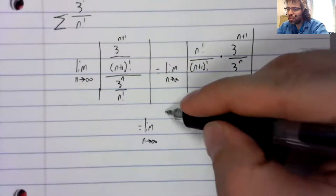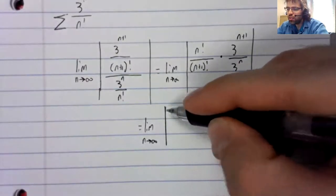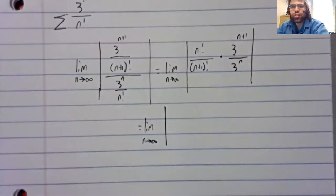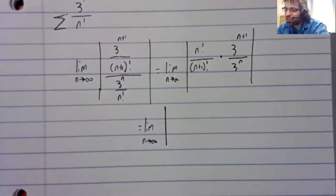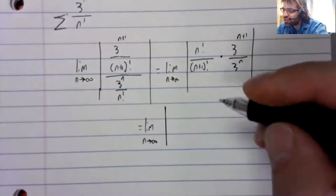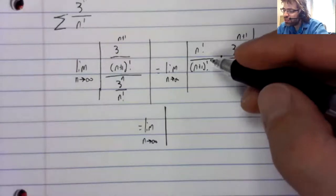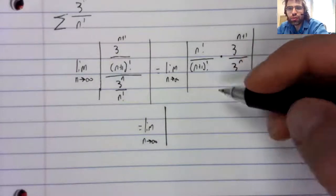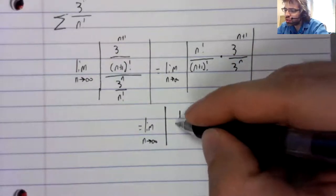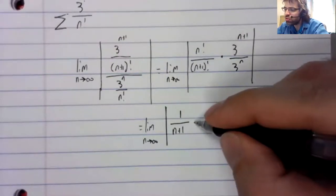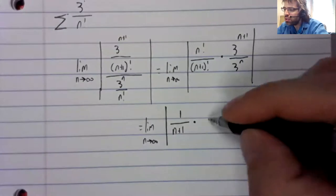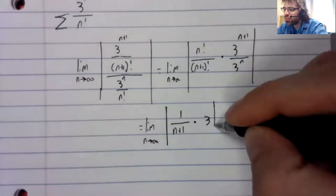What we need, well actually we don't, we need to not get one and we need for the limit to exist. So n factorial over n plus 1 factorial is 1 over n plus 1, times 3.